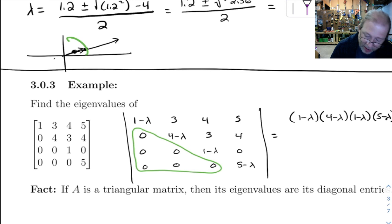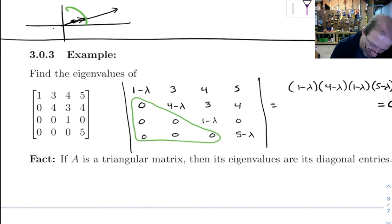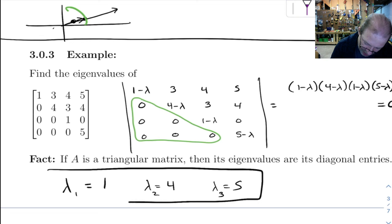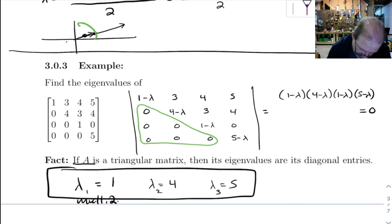So if you take all that and set it equal to 0, our eigenvalues here are 1, 4, 1, and 5. So we get 3 eigenvalues there, and this one right here has multiplicity 2 because it shows up twice, but we're only going to count it once. So anyway, so this fact here happens. If A is a triangular matrix, then the eigenvalues are just those diagonal entries.